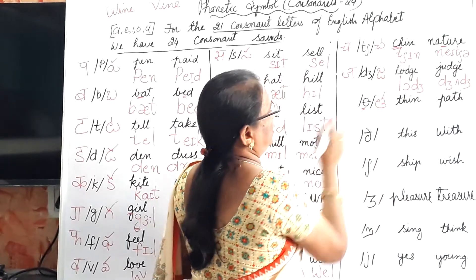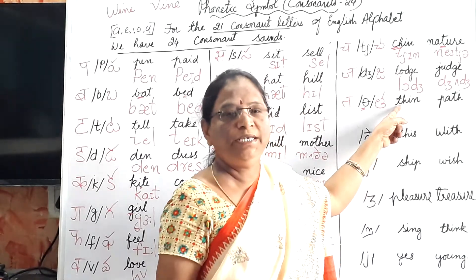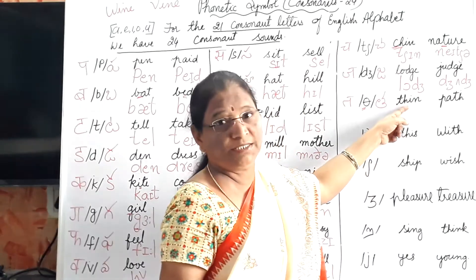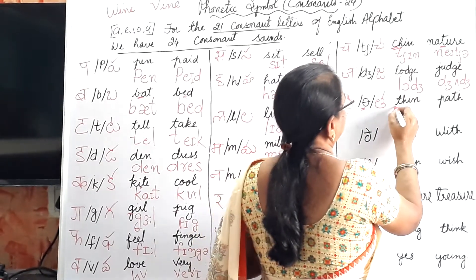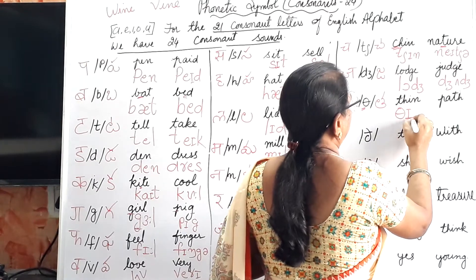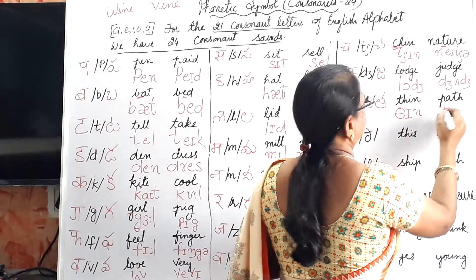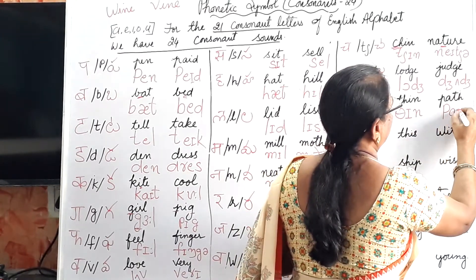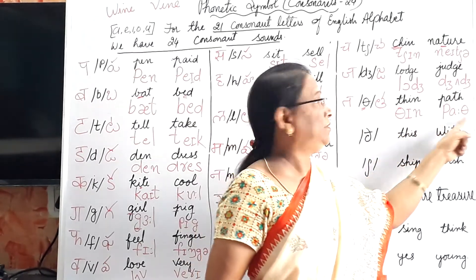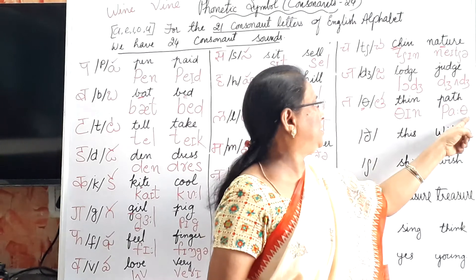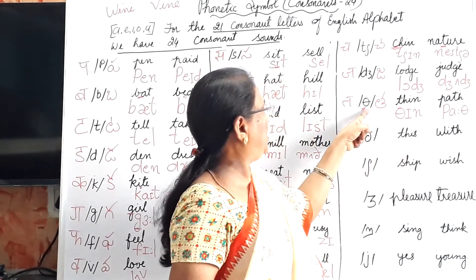This is the /θ/ (tha) sound. Don't think all TH gives the same sound — it is not always /θ/. Sometimes TH gives /θ/ and sometimes /ð/ — it depends on the pronunciation. Example: thin — TH gives /θ/. Path — TH gives /θ/ at the end.